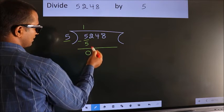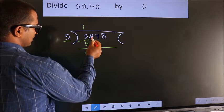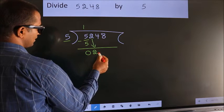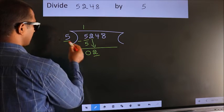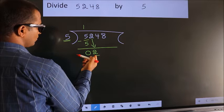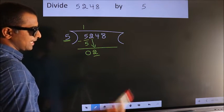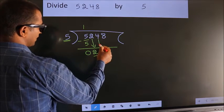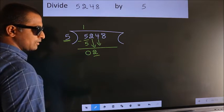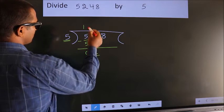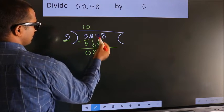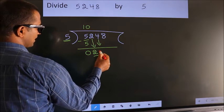After this, bring down the next number. So 2 down. Here we have 2. Here 5. 2 is smaller than 5, so we should bring down the second number. The rule for bringing down the second number is to put 0 here. Then only we can bring down this number.